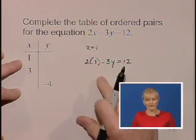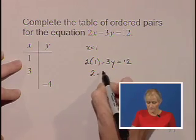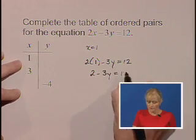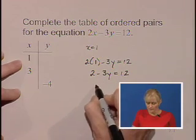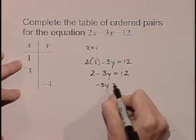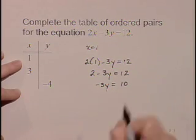Ready to simplify our left hand side and solve for y. 2 times 1 is 2 minus 3y equals 12. Let's subtract 2 from both sides and we'll get negative 3y equals 12 take away 2, which is 10.